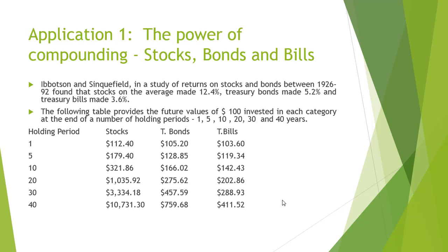Let us consider an interesting applied example on the topic of our discussion. The power of compounding is shown in this scenario where the time values of stocks, bonds, and bills are determined. In a study of returns on stocks and bonds between 1926 to 1992, Ibbotson and Sinquefield found that stocks on average made 12.4%, treasury bonds made 5.2%, and treasury bills made 3.6%. The following table provides the future values of $100 invested in each category at the end of a number of holding periods: 1, 5, 10, 20, 30, and 40 years. The formula of present value taught in the previous slide can calculate this table.